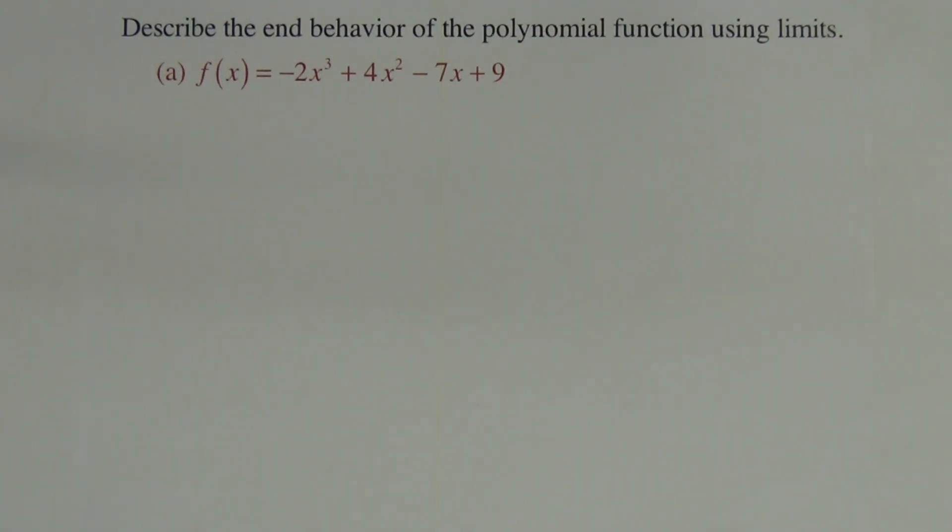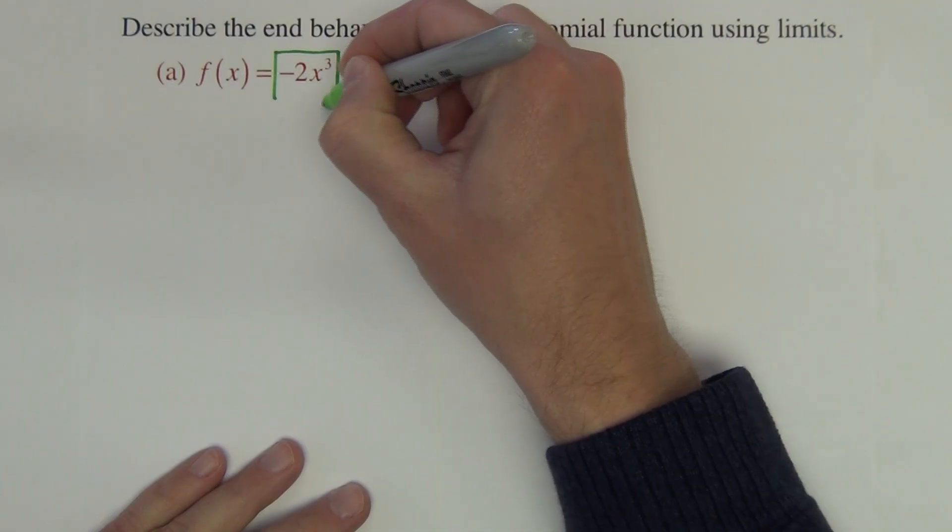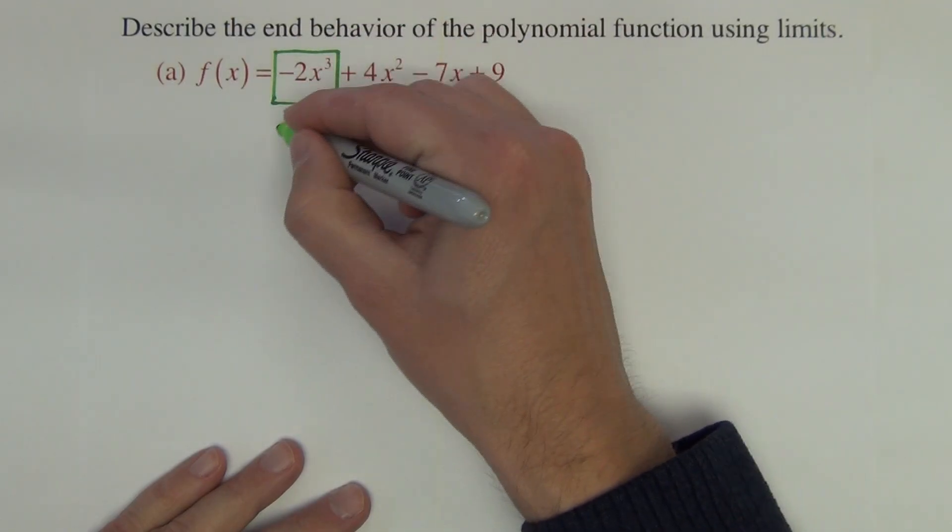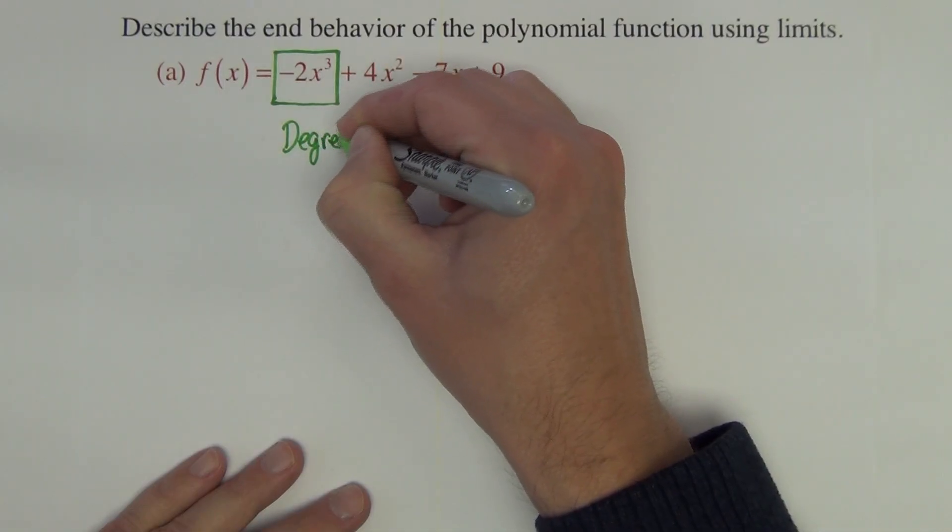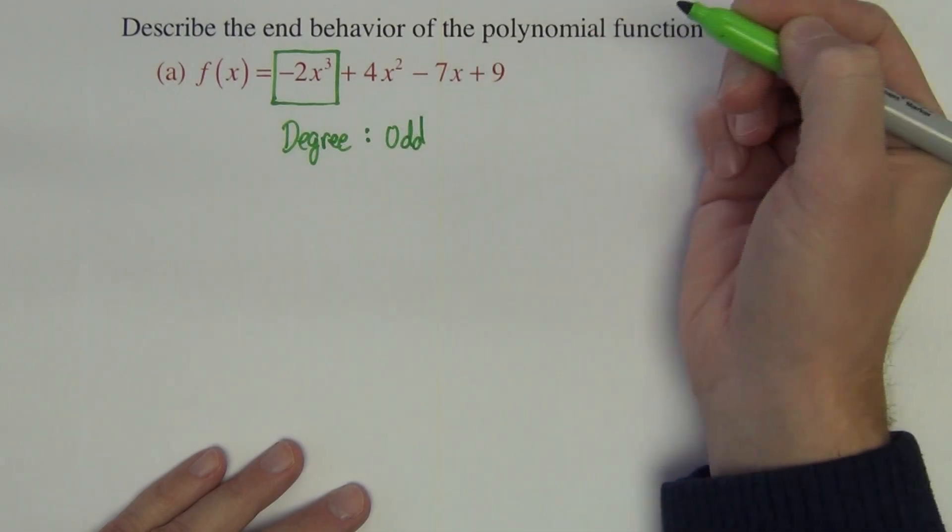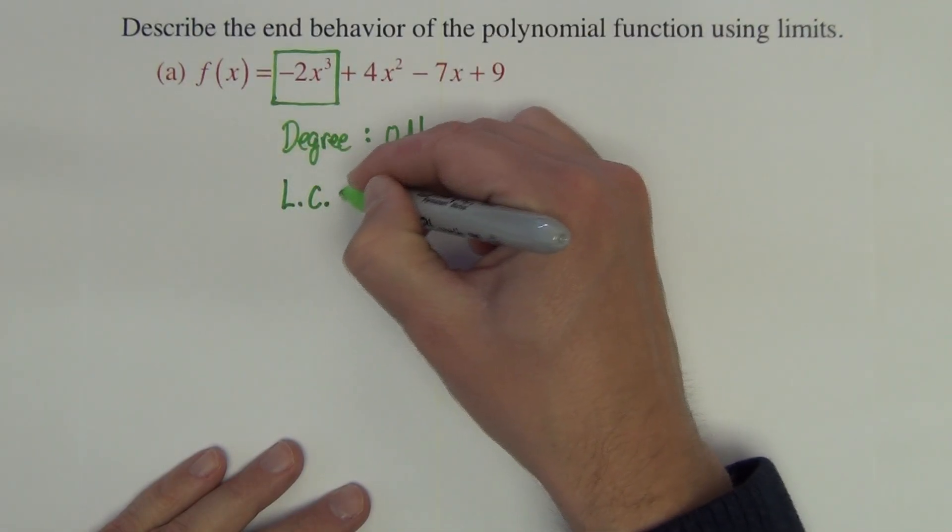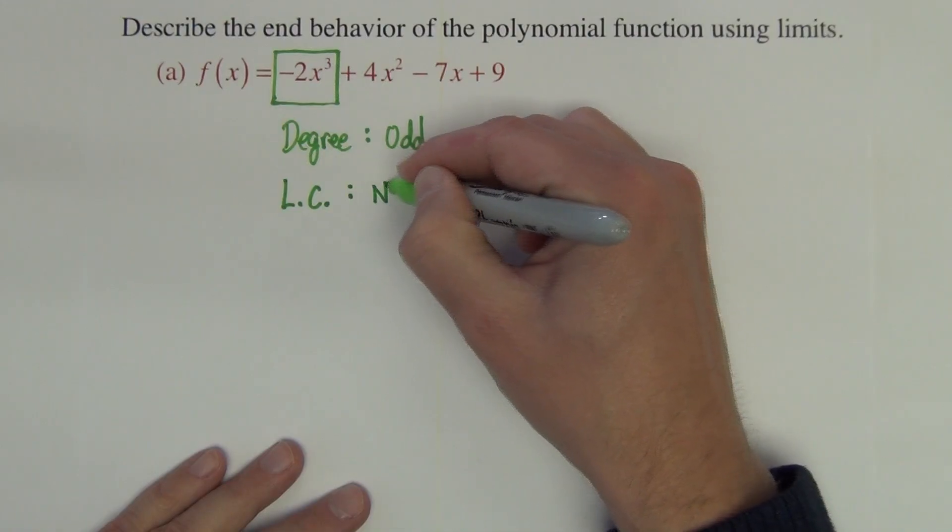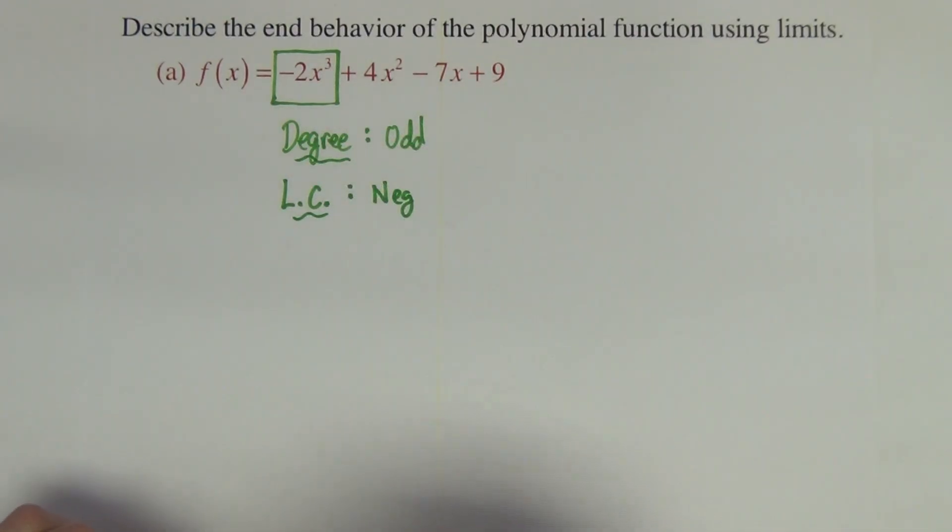The end behavior of a polynomial function is all controlled by this leading term. What we're looking for are two things. We want to know that the degree is odd. Odd versus even would behave differently. And we need to know that the leading coefficient is negative. If we know those two things, that should be enough to know what the end behavior of this function is.